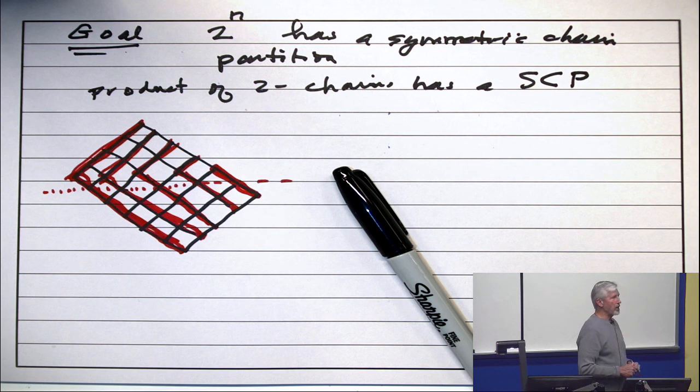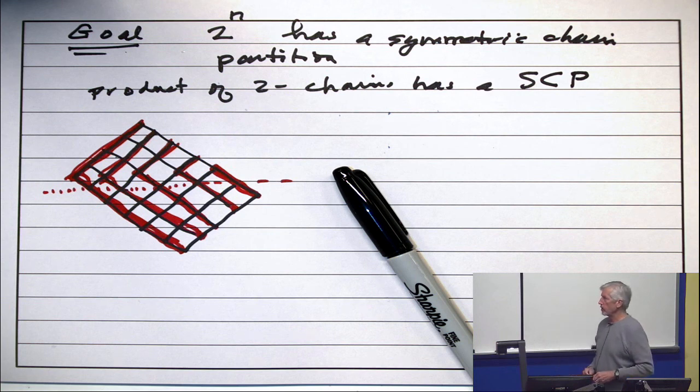So, anytime you have a rectangular grid, the product of two chains as posets, there's a symmetric chain partition.